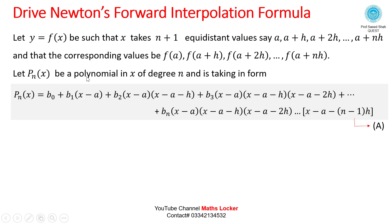Let Pn(x) be a polynomial of degree n in the form: Pn(x) = b0 + b1(x−a) + b2(x−a)(x−a−h) + b3(x−a)(x−a−h)(x−a−2h) + ... + bn(x−a)(x−a−h)(x−a−2h)...(x−a−(n−1)h). Call this equation (A).